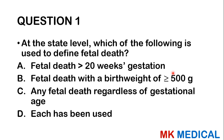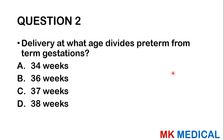All of these definitions have actually been used. Death after the age of viability — which differs in different countries, some put it at 24 weeks, some at 28 weeks — but if the baby is greater than 500 grams, you refer to that as fetal death, or any death regardless of gestational age. All these definitions have been used. Question two: Delivery at what age divides preterm from term gestations?